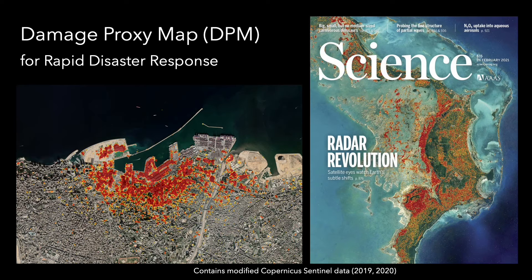Using such SAR observations, we developed a suite of different methods to detect significant changes on the ground. One of these products is called the Damage Proxy Map, which shows locations of building or land damage caused by natural disaster events such as earthquakes, volcanoes, tropical cyclones, tornadoes, landslides, and wildfires. These figures show Damage Proxy Maps of Beirut after the August 2020 explosion and the Bahamas devastated by Category 5 Hurricane Dorian in 2019.